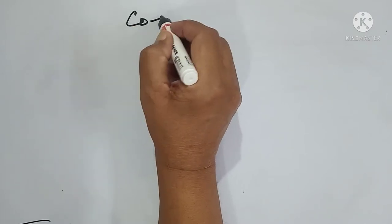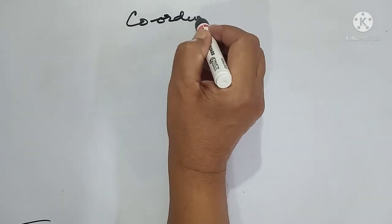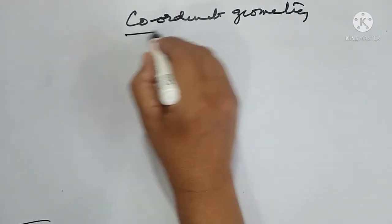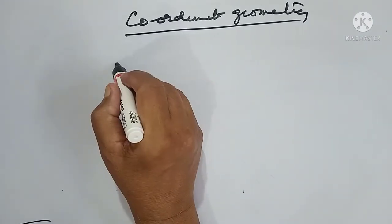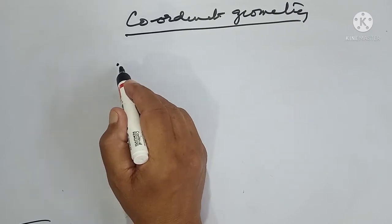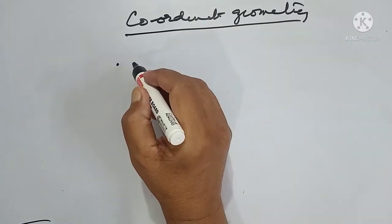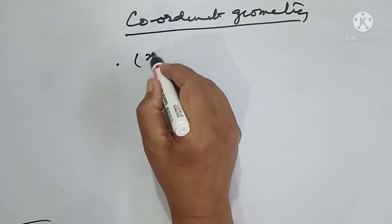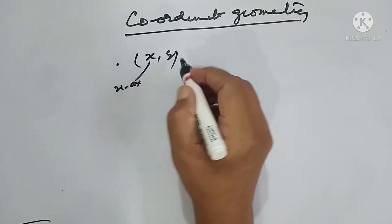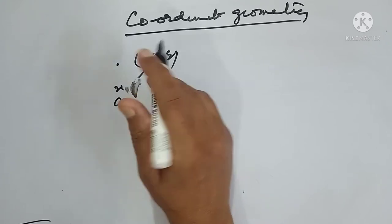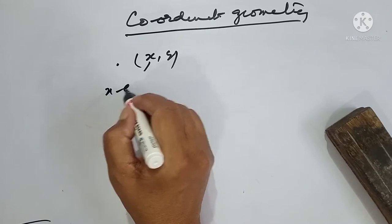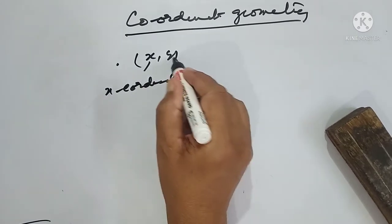Today we start with Coordinate Geometry. First we define a point. A point is a position having no length, no breadth, no height. It is graphically represented as an ordered pair of X, Y. This is called the X coordinate, and this is called the Y coordinate.